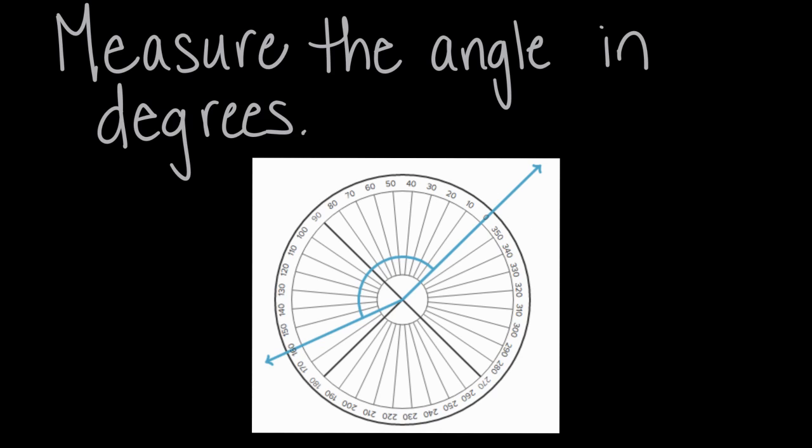That circle is actually a protractor. Sometimes we see, and maybe what you're used to seeing, is protractors that are more semicircle-shaped, something like this. And those semicircle protractors measure from zero to 180 degrees.